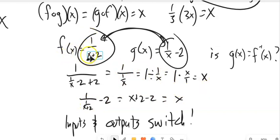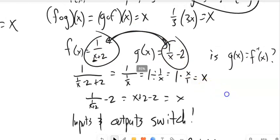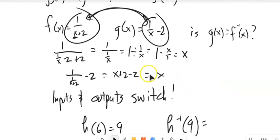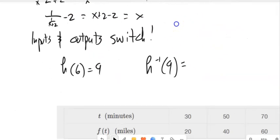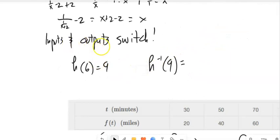So in other words, if I plug a value into here and plug that answer into there, I get my original value back. So if we ended up with something other than x, that would mean they're not inverses.